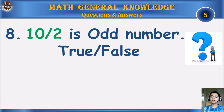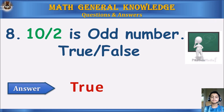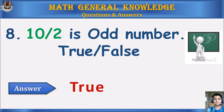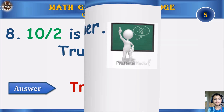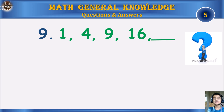Answer: False. 10 divided by 2 — is it an odd number? True or false? Your time starts. Answer: True. 1, 4, 9, 16 — what comes next? Your time starts.